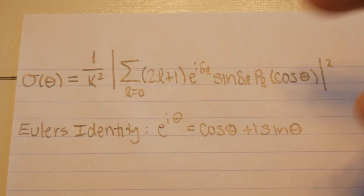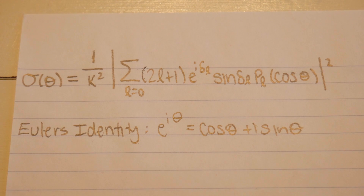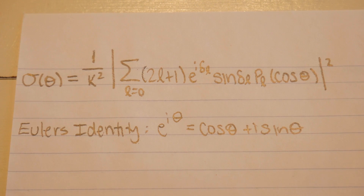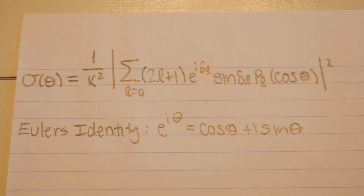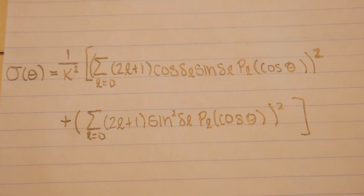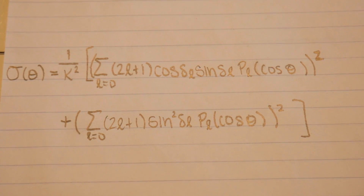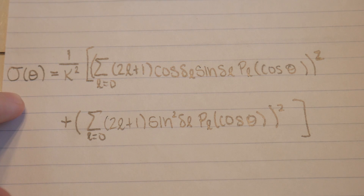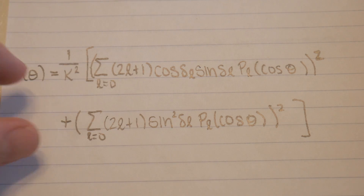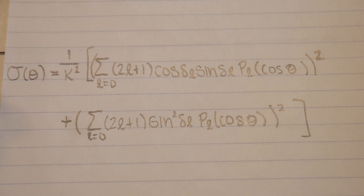E to the i theta is equal to cosine theta plus i sine theta. You can derive this just by using a Taylor series on cosine of theta and sine theta, putting some stuff together and multiplying some stuff by i. When you expand through that identity, what you get is this equation — a bit longer and more tedious to write out, but what there isn't in this equation is e to the i delta L, because you substitute in Euler's identity.